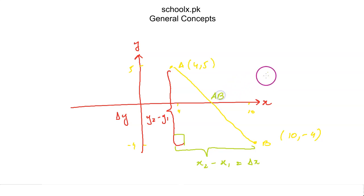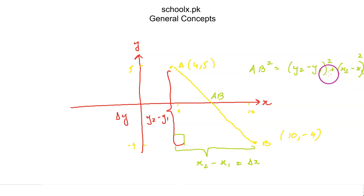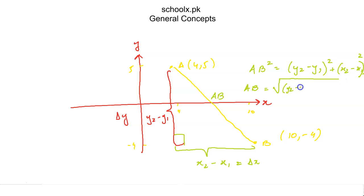So AB squared equals (y2 minus y1) squared plus (x2 minus x1) squared — it's important to keep the order consistent. Therefore AB is given by the square root of that expression. That's how the distance formula is derived from the Pythagorean theorem — quite simple!